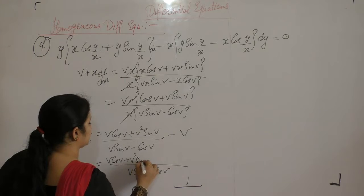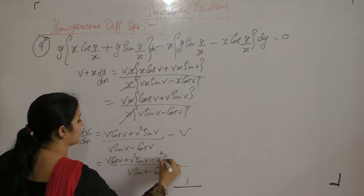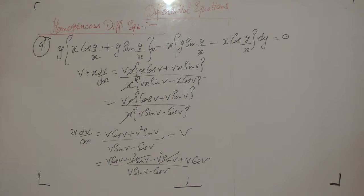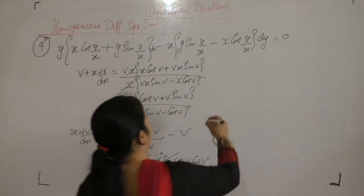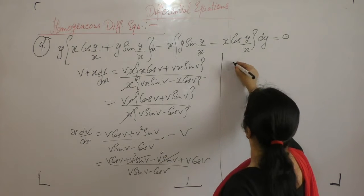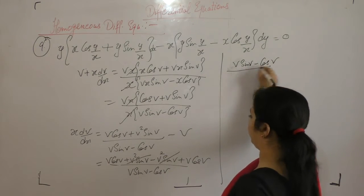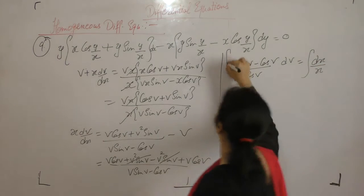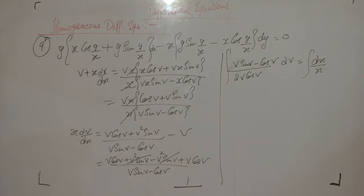Taking v sin v minus cos v as common in the denominator: the numerator becomes v cos v plus v squared sin v minus v squared sin v plus v cos v, simplifying the expression. After further simplification we have dv upon v cos v equals dx upon x. Now we integrate both sides.